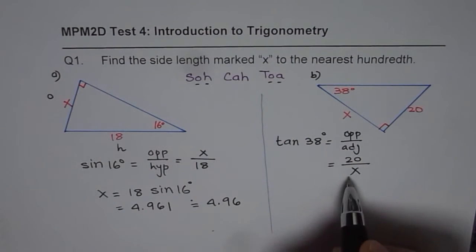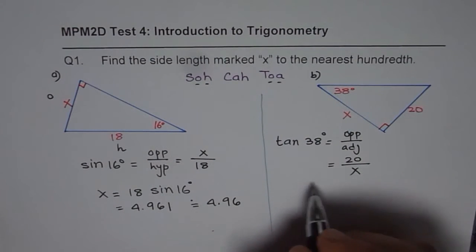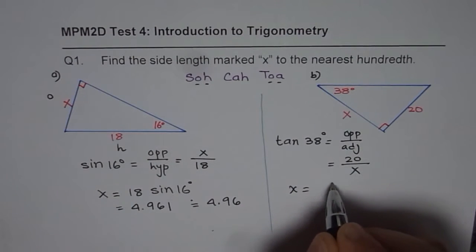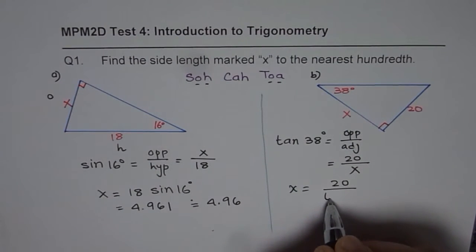Therefore we can cross multiply and solve for X. This is kind of a ratio. So X is equal to 20 divided by tan of 38 degrees.